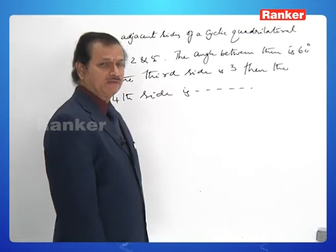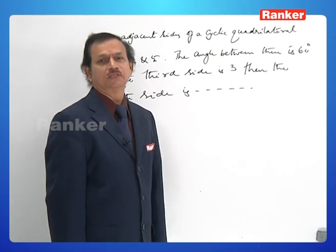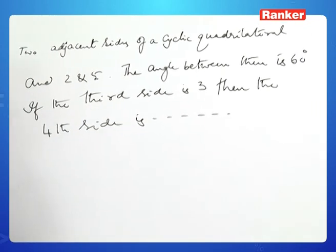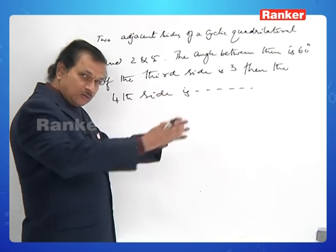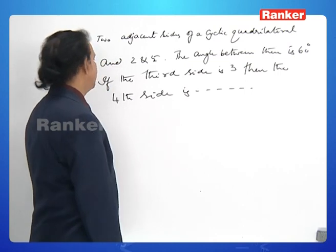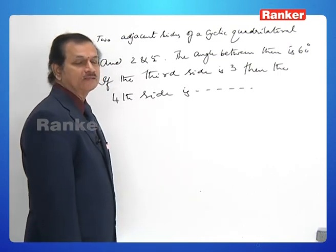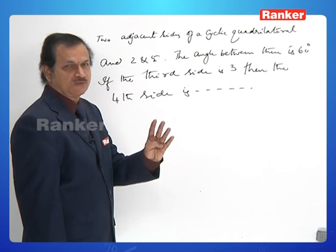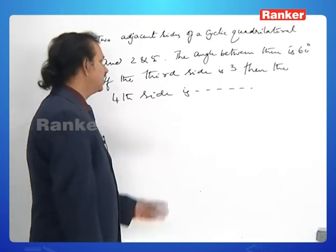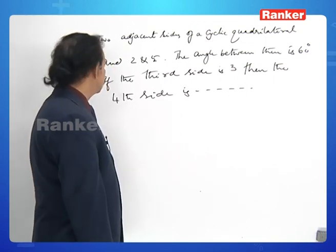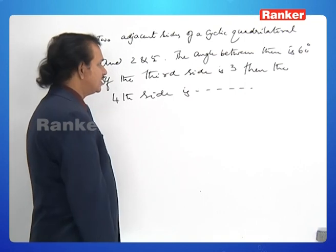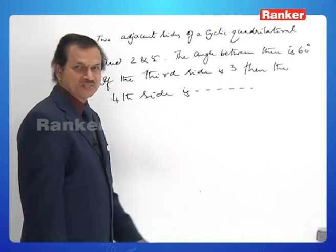The next problem has lengthier information — follow carefully. Two adjacent sides of a cyclic quadrilateral are 2 and 5. The angle between those two adjacent sides is 60°. If the third side is 3 cm, then what is the fourth side?